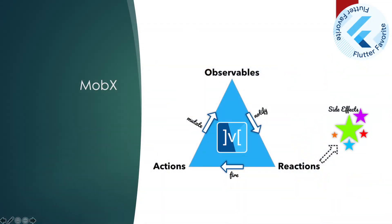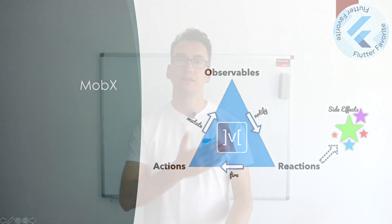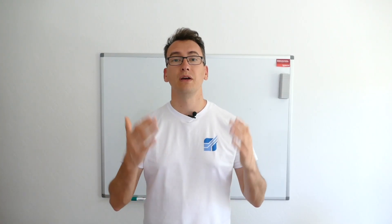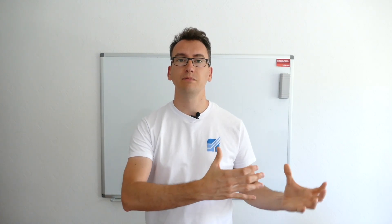The MobX package is one of my favorites because it has multiple stores. You have actions that mutate observables, the observables notify the reactions, giving side effects — like reading from a database — which fire an action. Why I love this package is the perfect code generation it provides. As you can see, most of the packages shown today have the Flutter Favorite sign, which shows the higher bar of expectation that the Flutter team has for a package to receive that designation.